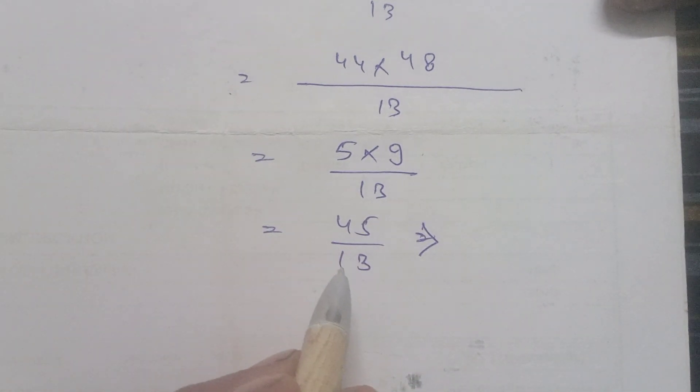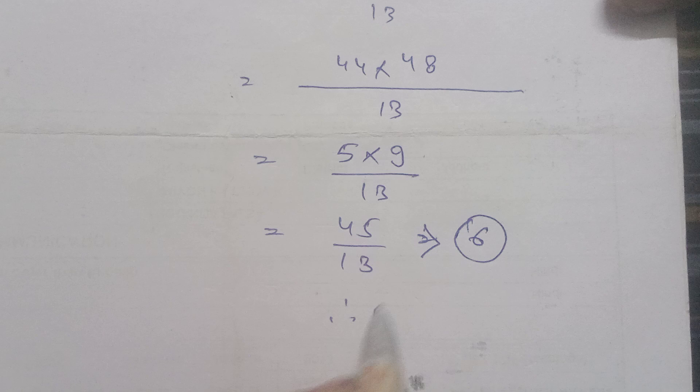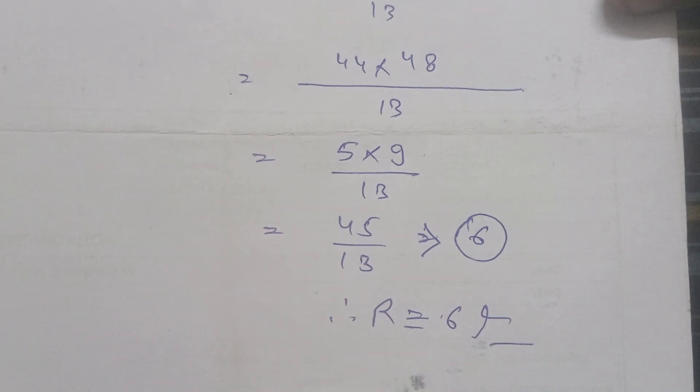So 13 times 3 is 39, and the remainder will be 6. Therefore, the remainder is 6. I hope you like this video.